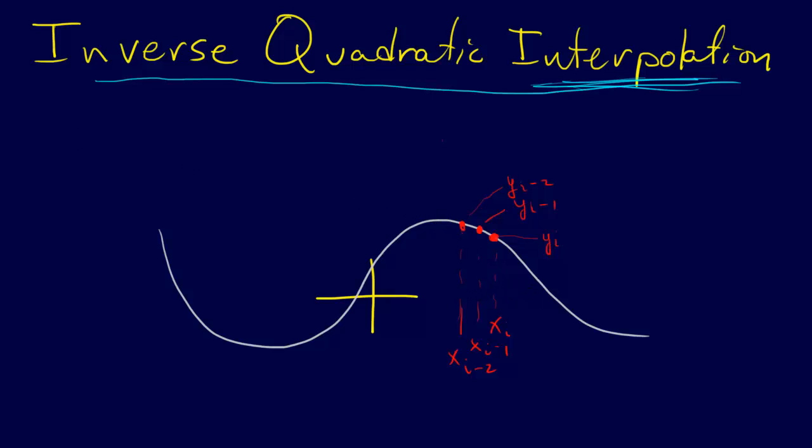And so with inverse quadratic interpolation, what we do is we fit a quadratic in y. So if we were to look at this, then, we fit a quadratic in y. I don't know, that isn't really that good of a quadratic, because it probably wouldn't be that bad, it would probably be more like that, and then, get rid of that, alright?